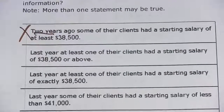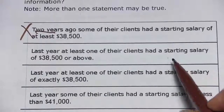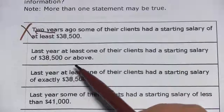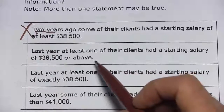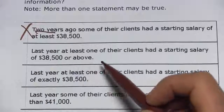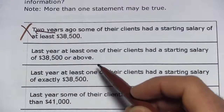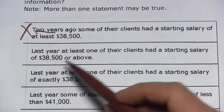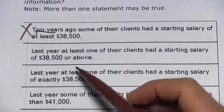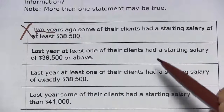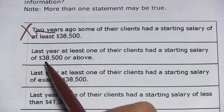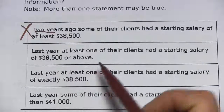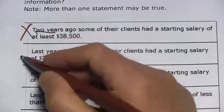The next one says: last year at least one of their clients had a starting salary of $38,500 or above. This one has to be true, because the two ways you can have an average of $38,500 are for everybody to have $38,500, or for some to be above and some to be below. Either way, you've got to have someone with a starting salary of $38,500 or above. So this is true.